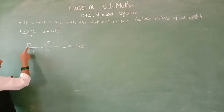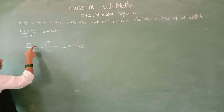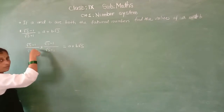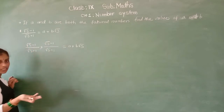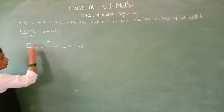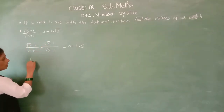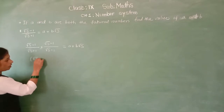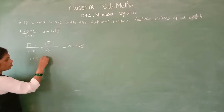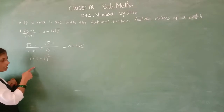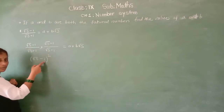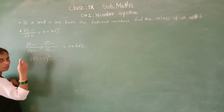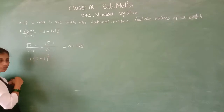Now what will be in the numerator? Root 3 minus 1, then root 3 minus 1 again. So the next step is multiplication of numerator upon multiplication of denominator. Both factors are the same, so we write it as root 3 minus 1 squared — it appears 2 times so we take it as a square.